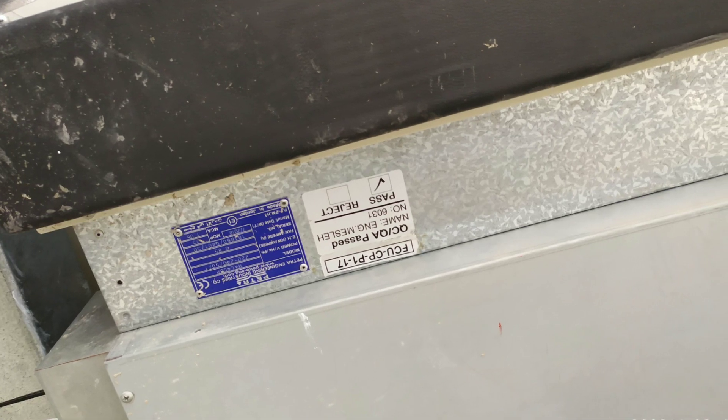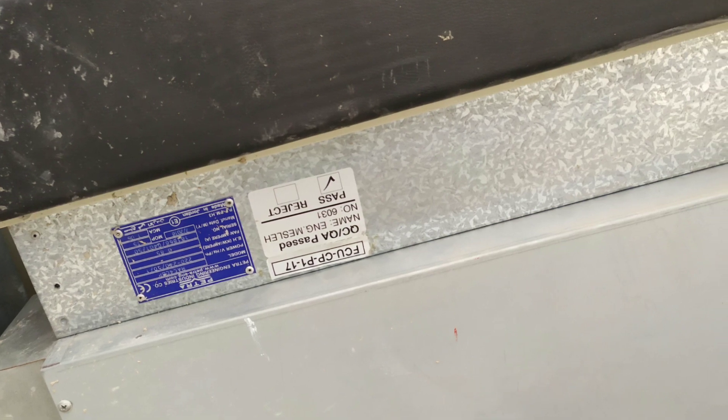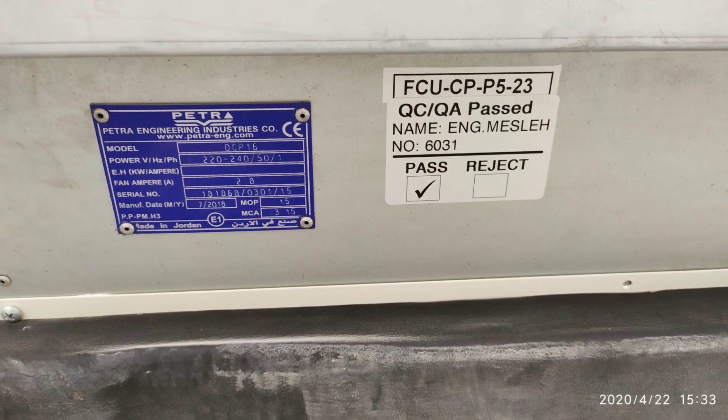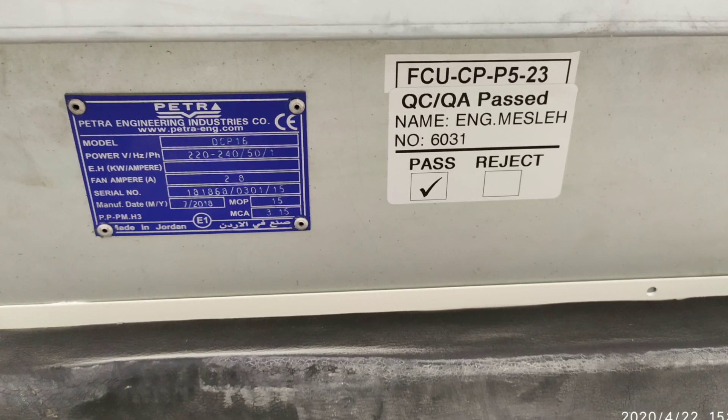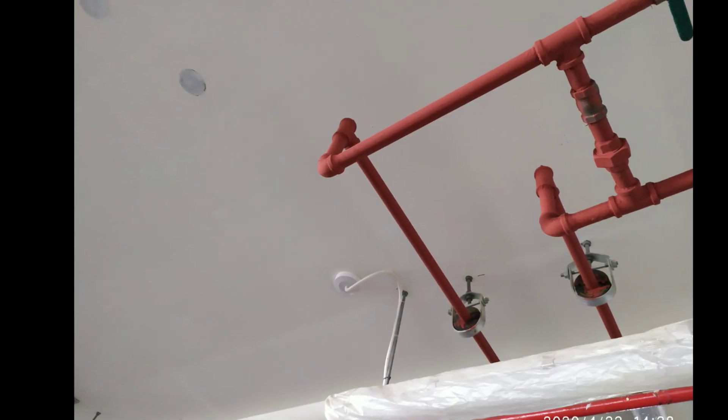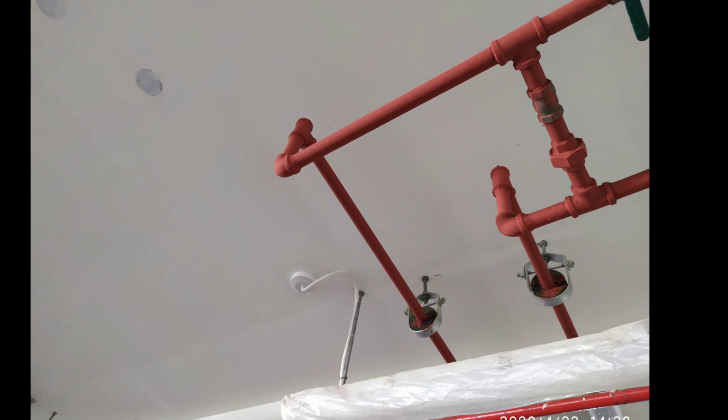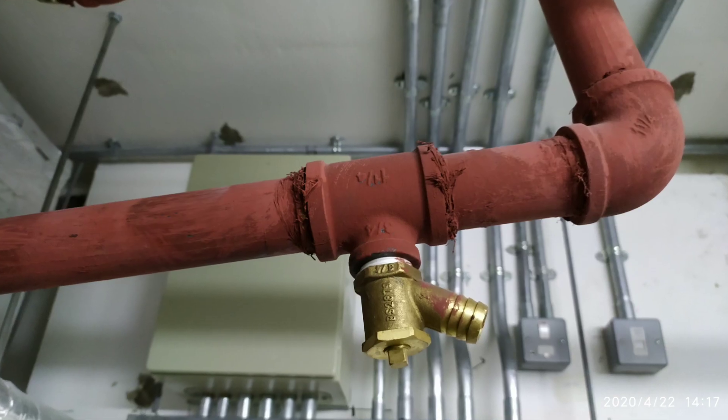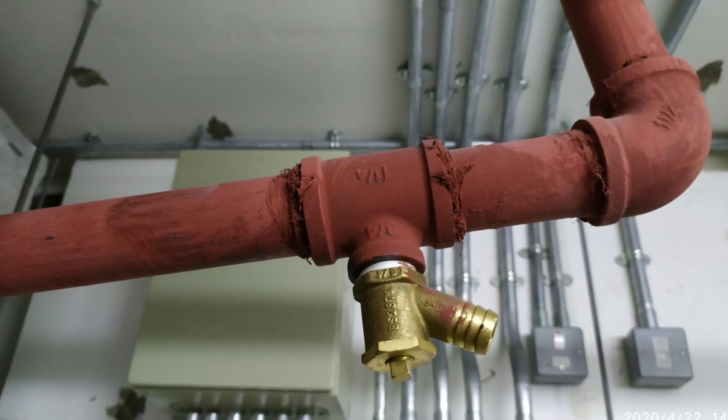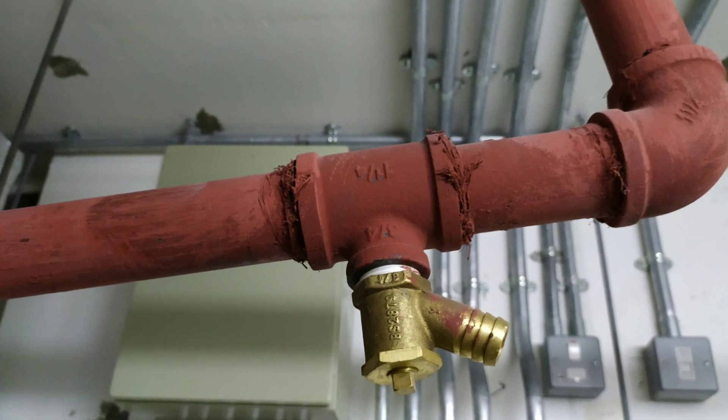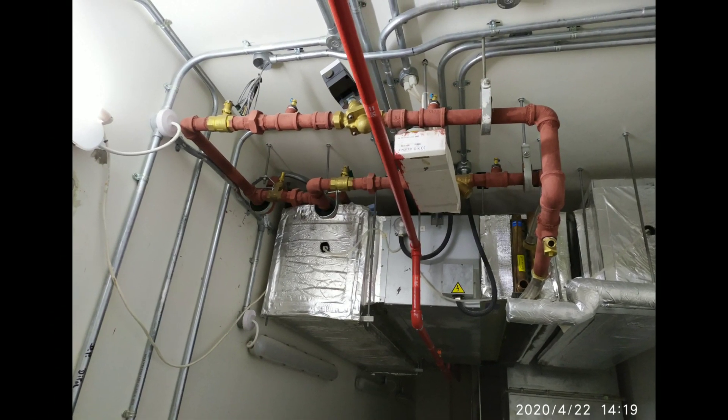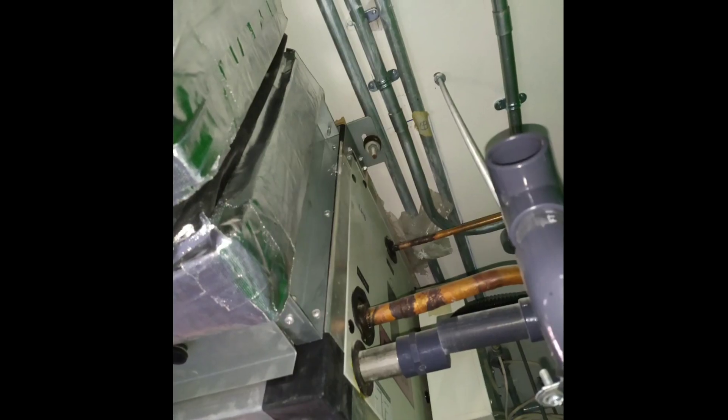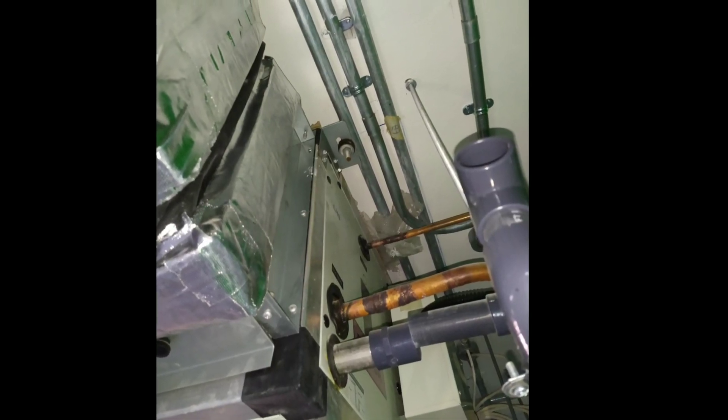This is the FCU number and the nameplate. This blue plate is the nameplate. This is called model number DPC16. We have to use the model number as per the schedule because of the number of rows, heating coils, their cooling capacity, heating capacity are different as per the schedule and the heat load calculation we use over here.